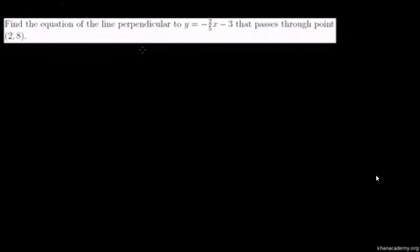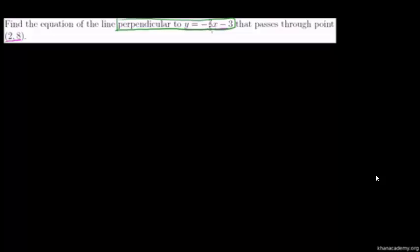Let's do one more: find the equation of a line perpendicular to this line that passes through the point (2, 8). The line given has a slope of negative 2 fifths. If our new line is perpendicular, its slope has to be the negative inverse of negative 2 fifths. The inverse of 2 fifths is 5 halves, and the negative of negative gives positive. So the perpendicular line's slope is positive 5 halves.